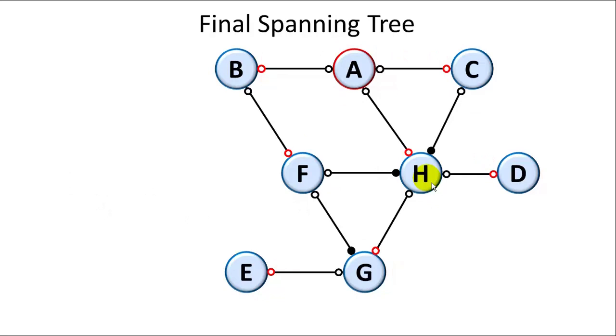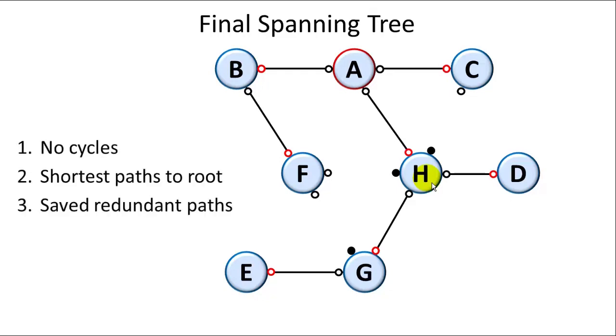This is what our final spanning tree looks like. We hide the connections that are blocked by these blocking ports, and we get a spanning tree that looks like this. So there are no cycles.